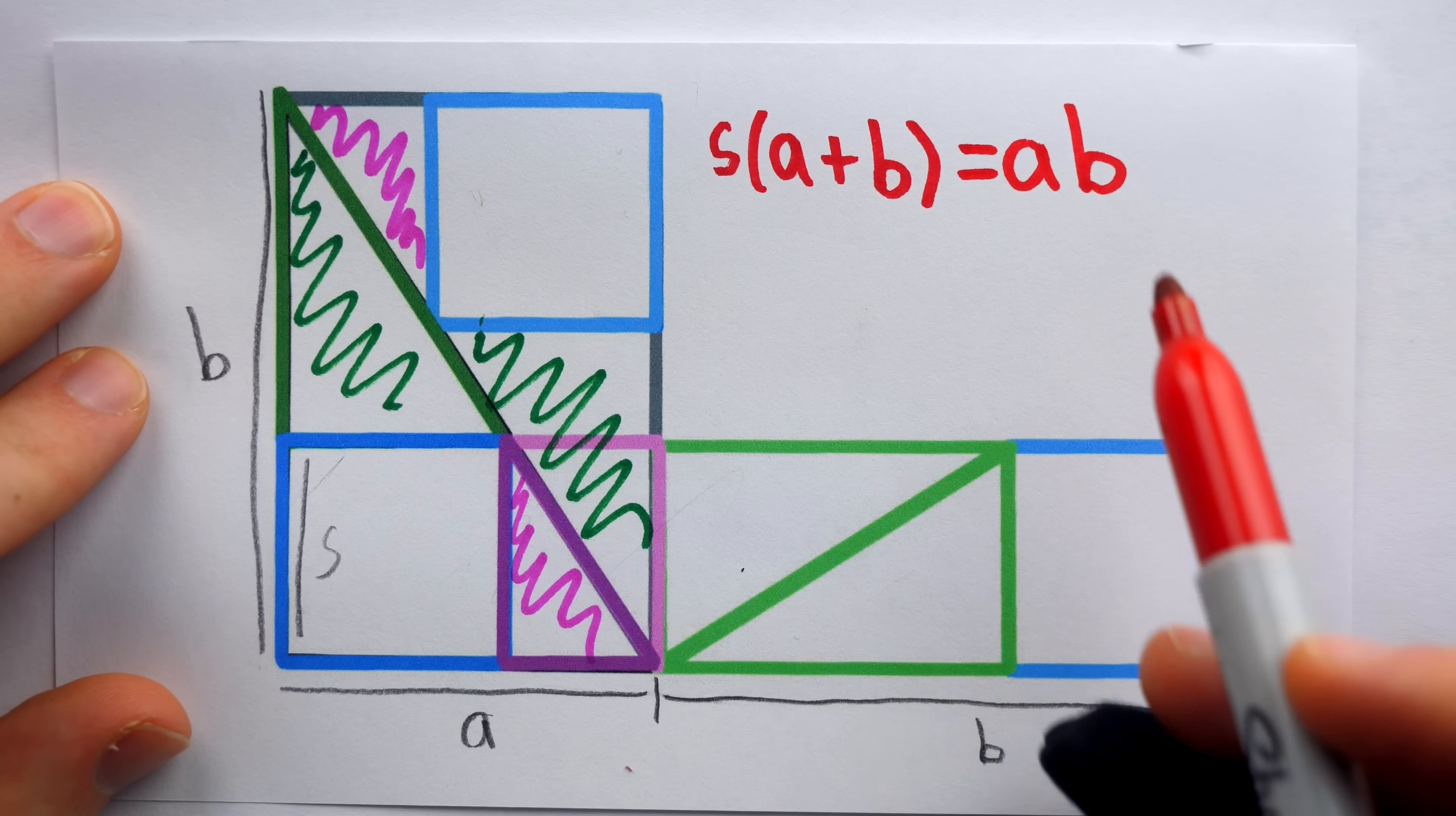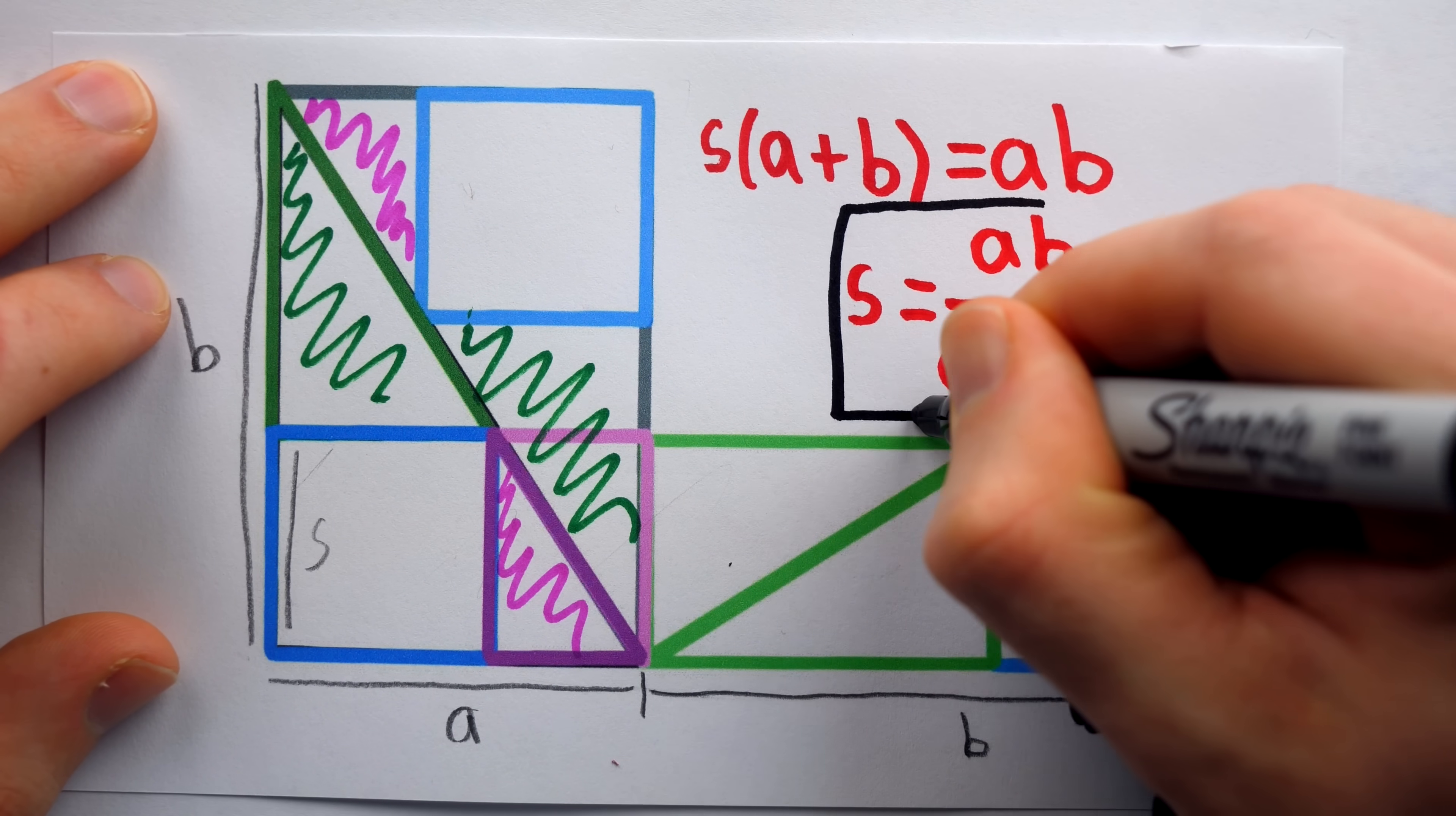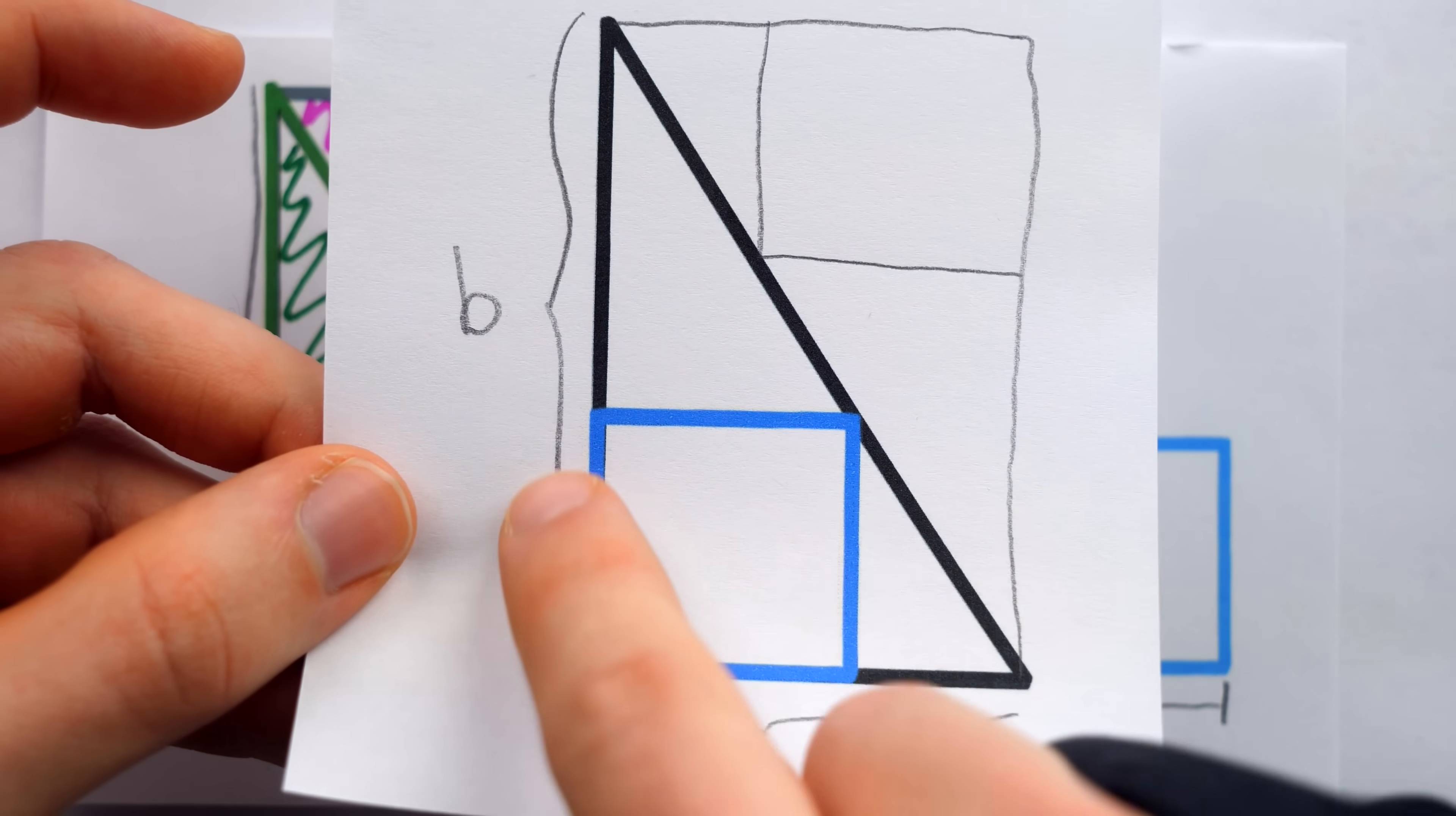S times A plus B equals A times B. And hence, the solution to this problem from the Haidao Suanjing is that the side length of the square inscribed in the right triangle is, in fact, A times B divided by A plus B. It is really quite an elegant solution. If a square is inscribed in a right triangle in this way, then its side length will have to be the product of the right triangle's legs divided by the sum of the right triangle's legs. That's really cool.